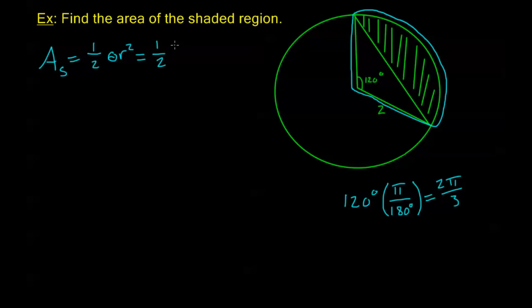So, my angle measure theta in radians is 2 pi over 3. My r is 2 from my picture, so I have 2 squared. Now, this squared and the 1 half cancel out, and I get that the area of my circular sector is 4 pi over 3.